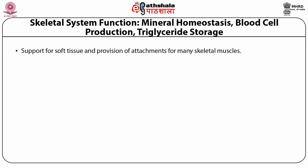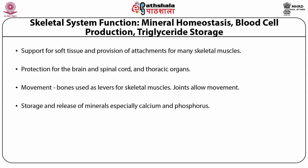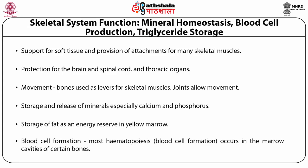First, support for soft tissue and provision for attachment for many skeletal muscles. Then protection for the brain, spinal cord, and thoracic organs. Movement: bones used as levers for skeletal muscles; joints allow movement. Then storage and release of minerals, especially calcium and phosphorus. Storage of fat as an energy reserve in yellow marrow. And lastly, blood cell formation — most hematopoiesis, that is blood cell formation, occurs in the marrow cavities of certain bones.